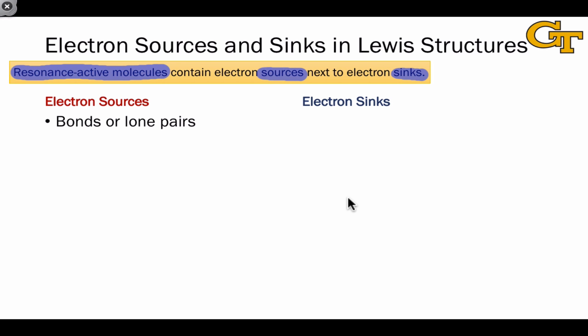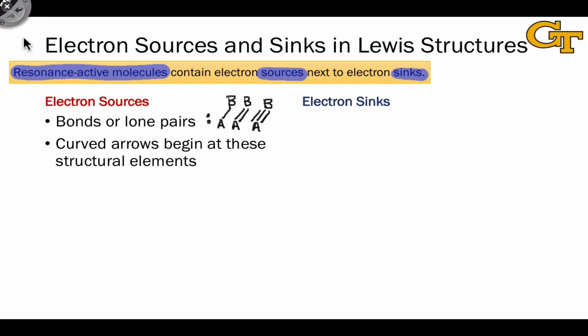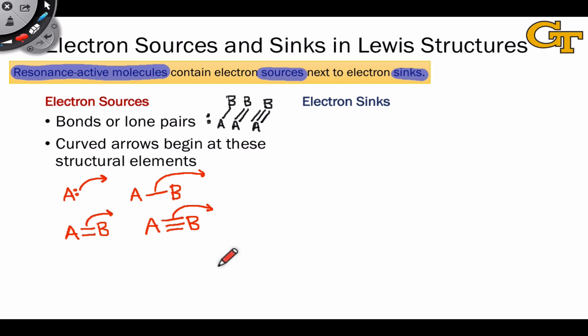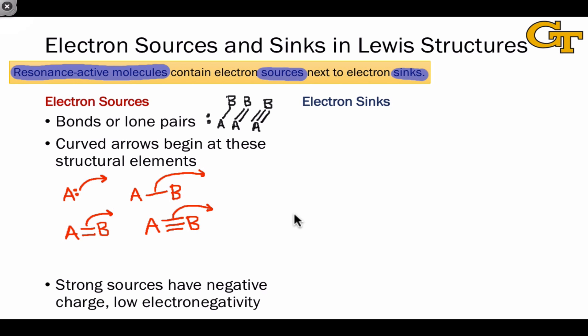Electron sources consist of visible elements of Lewis structures such as bonds or lone pairs. Curved arrows begin at these structural elements. In order to make decisions about what constitutes reasonable electron flow, we have to answer the question: what makes a good or strong electron source?